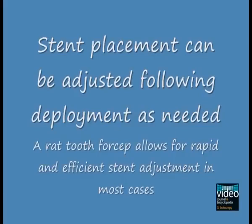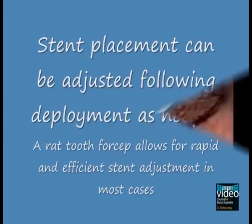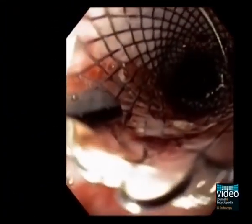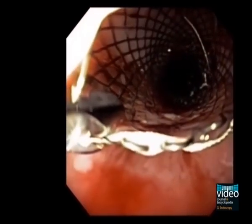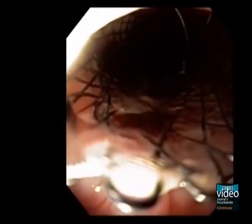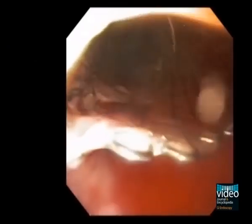Stent placement can be adjusted following deployment as needed. A rat tooth forceps allows for rapid and efficient stent adjustment in most cases. This video shows the use of a rat tooth forceps to proximally adjust the position to fully cover an esophageal stent. The stent is moved approximately 2 cm. When the stent is felt to be in adequate position, the rat tooth forceps release the stent and the position can be directly assessed endoscopically. If satisfactory, no other adjustment is required.